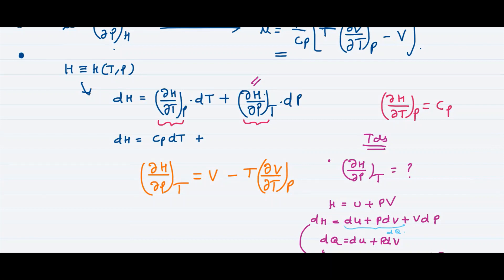Substituting back into our main equation, instead of (∂H/∂P) at constant temperature we write V minus T times (∂V/∂T) at constant pressure, multiplied by dP. Since H is constant, dH equals zero.